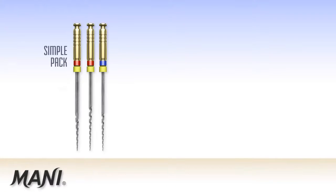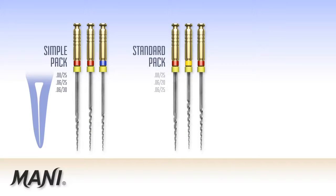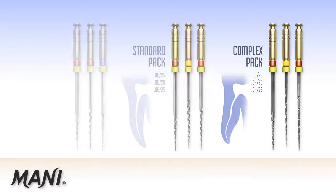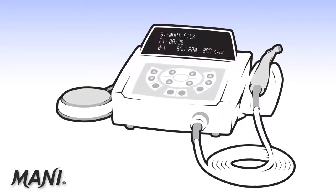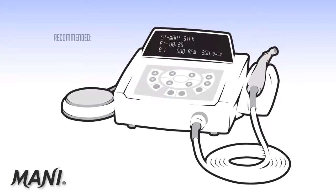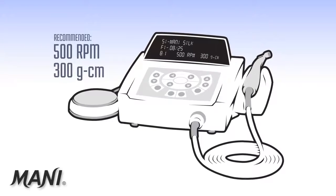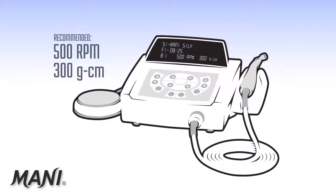The Mani SILK simple pack configuration is used in straight canals. The standard pack configuration is used in canals with mild curvature, and the complex pack configuration is used in canals with moderate to severe curvature and calcification. Any endodontic motor can be used to power Mani SILK. 500 RPM is recommended with a torque setting of 300 gram-centimeters.